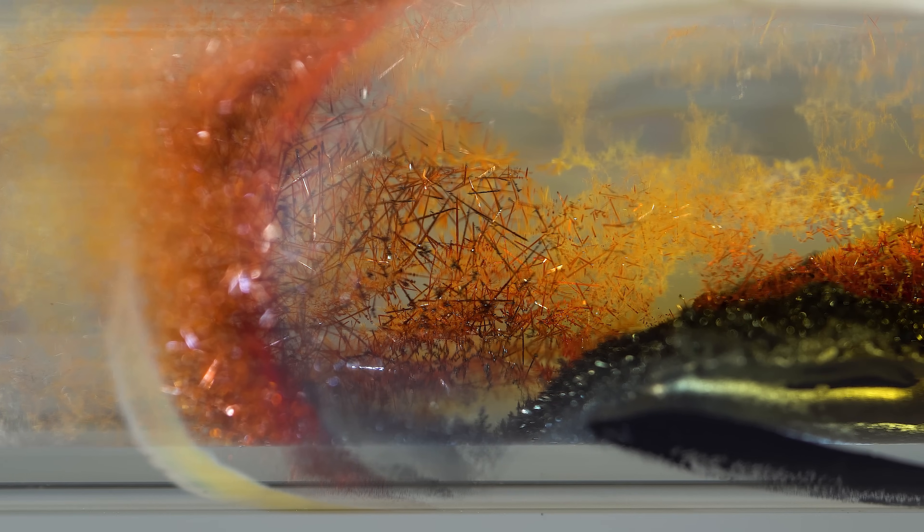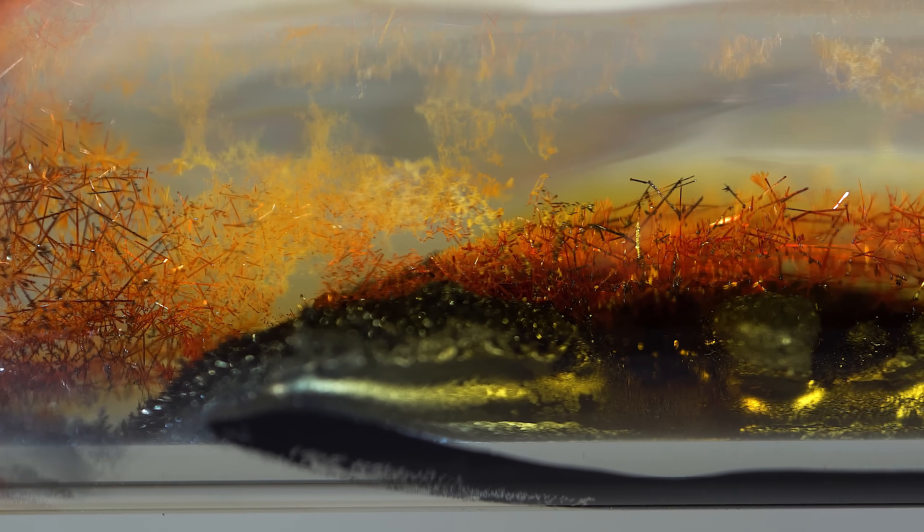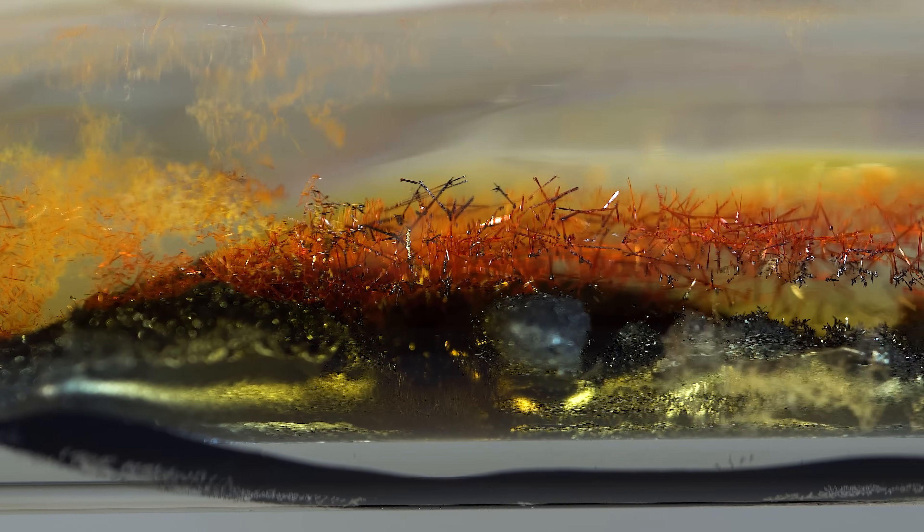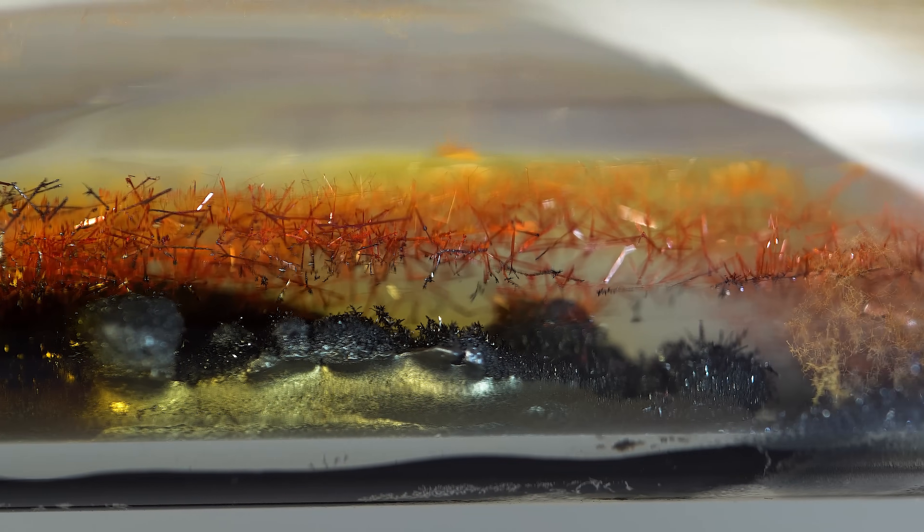These dark red needle-shaped crystals are tungsten oxytetrachloride, which in humid air rapidly transform into yellow tungsten dioxodichloride.